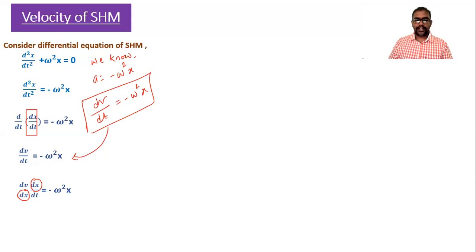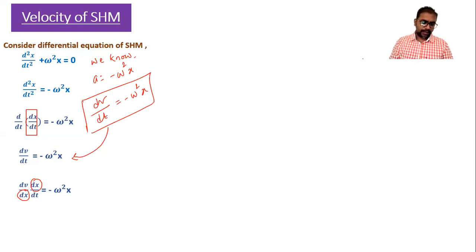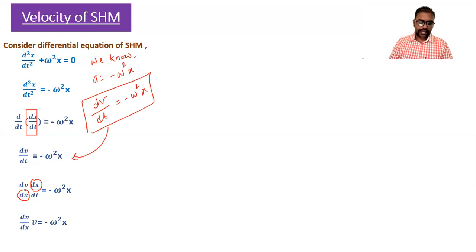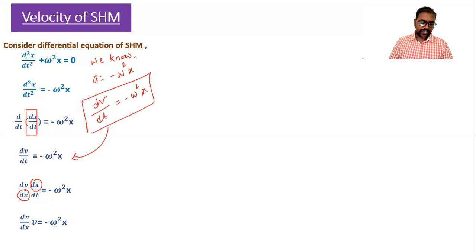After the adjustment, dx terms cancel and we get: (dv/dx)(dx/dt) = −ω²x. Since dx/dt = v, we get v(dv/dx) = −ω²x. Shifting the x term to the other side gives v dv = −ω²x dx.